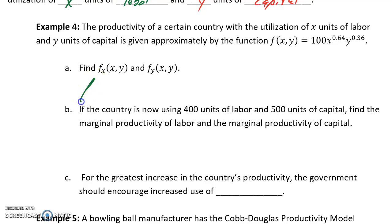Using Wolfram Alpha, we could calculate f sub x to be 64 times x to the negative 0.36, y to the 0.36. And f sub y, our partial derivative with respect to y, to be 36x to the 0.64, y to the negative 0.64.